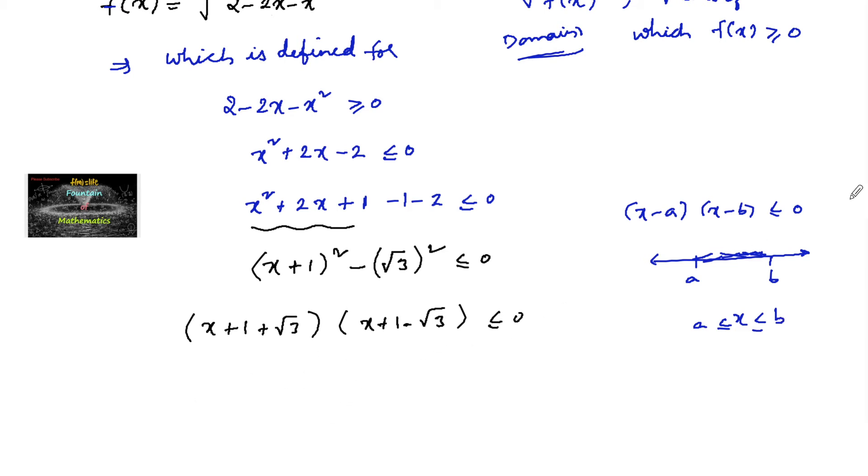So here we can consider the number line. And you can mark the numbers as this is minus 1 minus root 3, which will be smaller than minus 1 plus root 3. So minus 1 plus root 3 will be greater than minus 1 minus root 3.